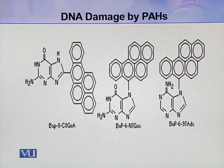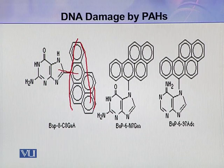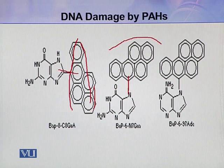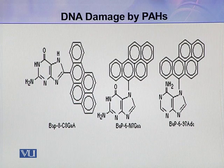Here are some examples of DNA damage by PAH. The PAH molecule can attach at the C8 of guanine, forming a monoadduct. Similarly, it can attach at the N7 of guanine. So in these two ways it can damage the guanine base. It can also form a monoadduct with adenine, where it attaches at the N9 of adenine. In this way, these monoadducts are formed by the active agents produced after metabolic activation of PAH.